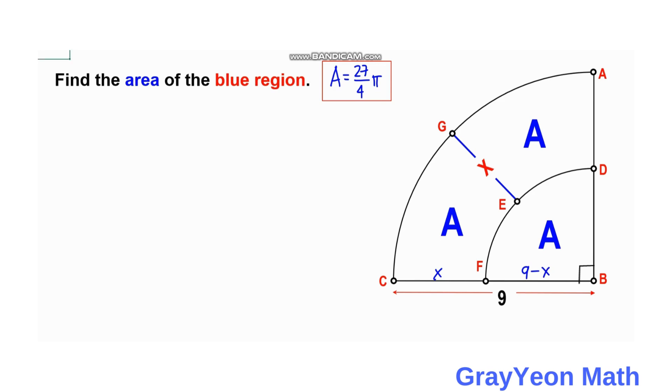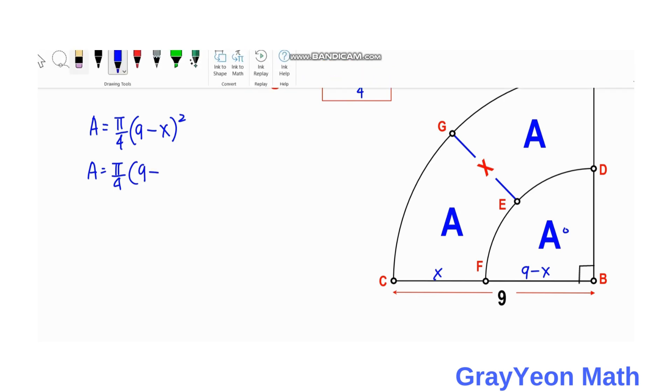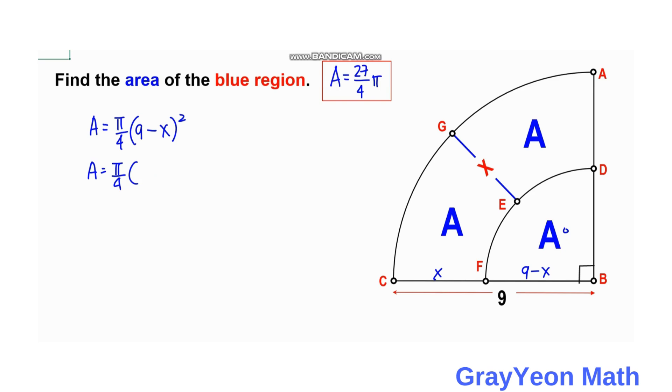So next is we write an equation of this quarter circle DFB. So the radius being 9 minus X and the area being A. So A equals pi over 4 times 9 minus X squared. So area equals pi over 4 times 81 minus 18X plus X squared.